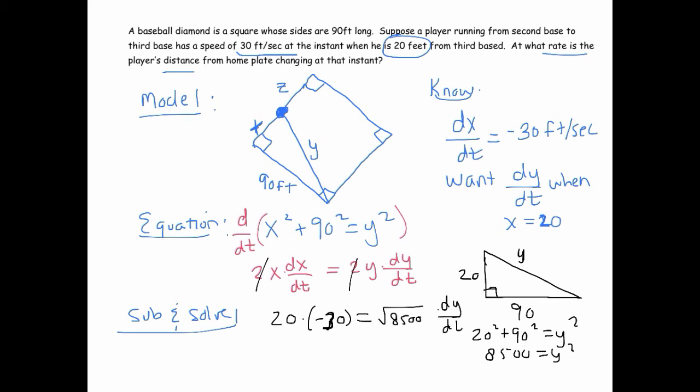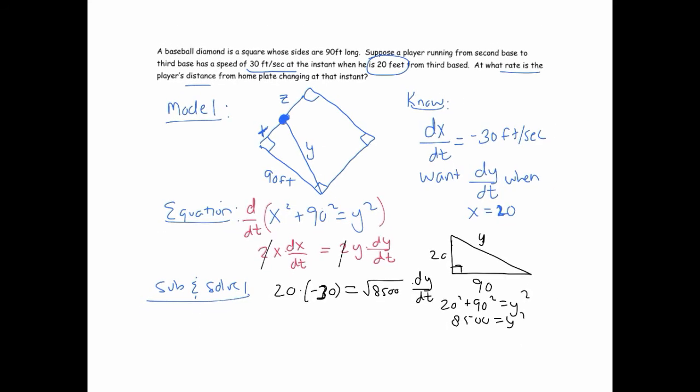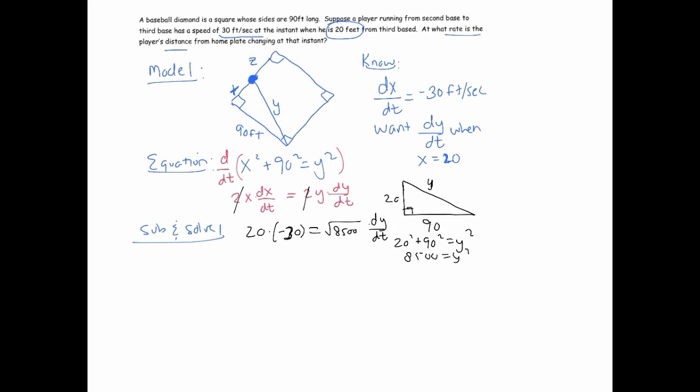And dy dt is what we want. So, that means that dy dt is going to equal 20 times negative 30 is negative 600 divided by the square root of 8500. And that ends up being about negative 6.508 feet per second.